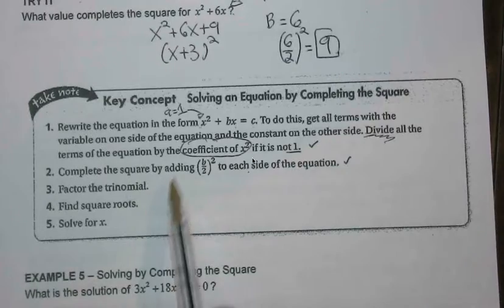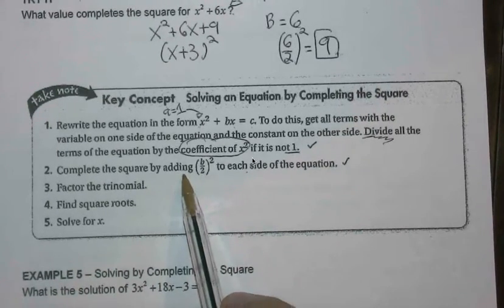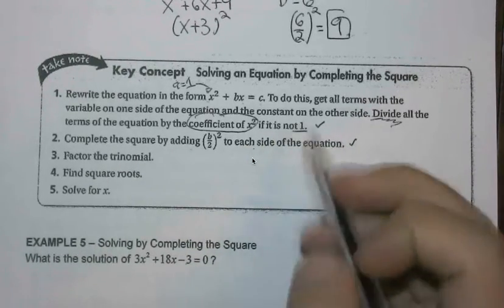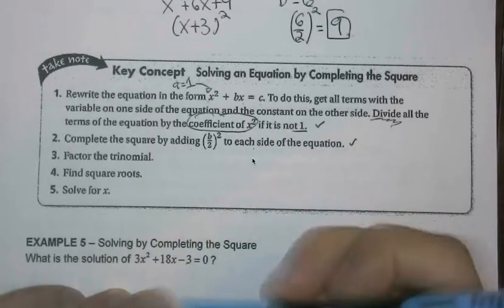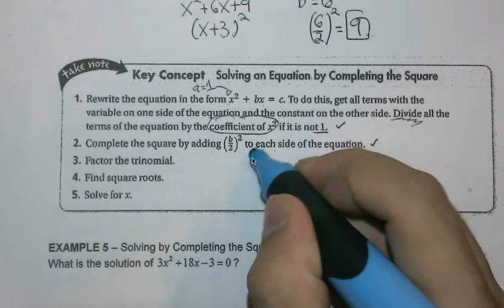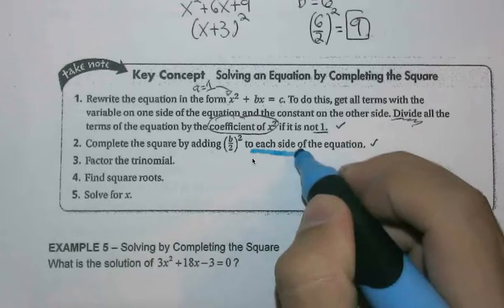So we then add in the completing the square term, the constant, or eventually what becomes the constant, to each side of the equation. And I'll underline this in blue because I think it's really important. And you'll see that there are lots of steps here. So I'll refer to this as I move through it.